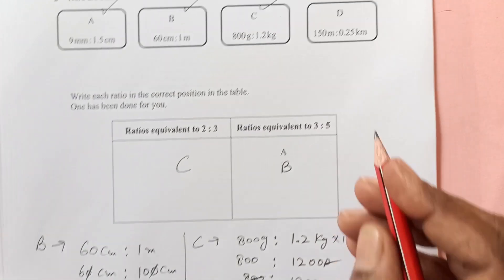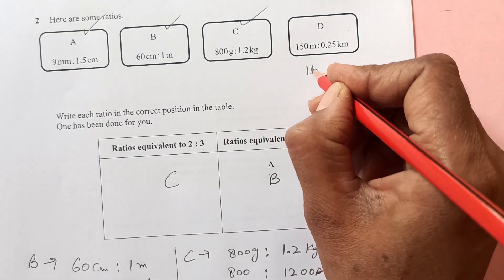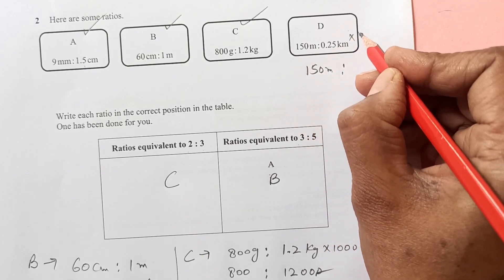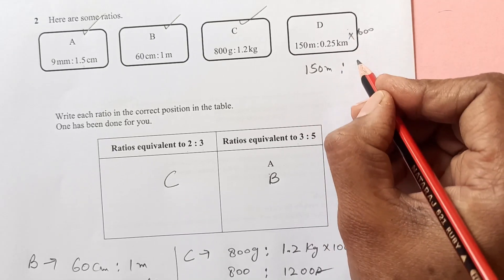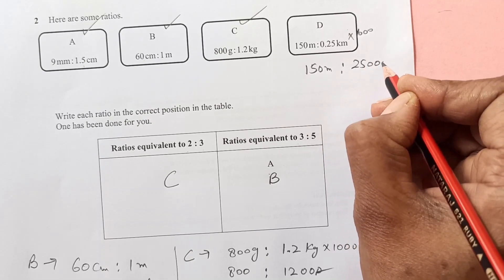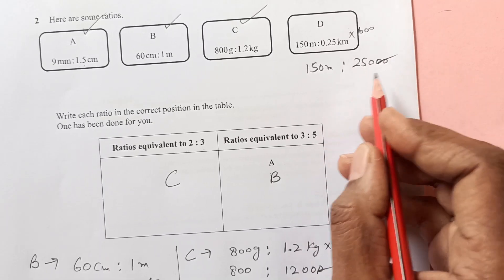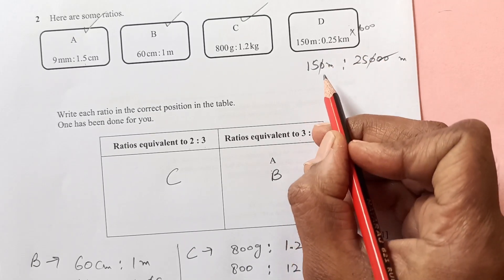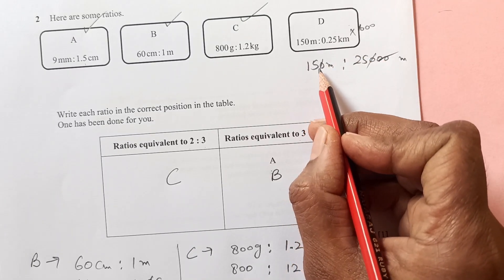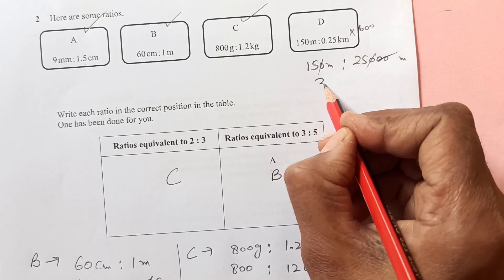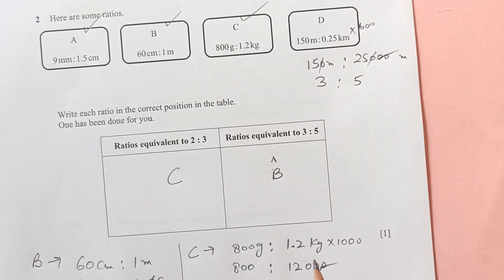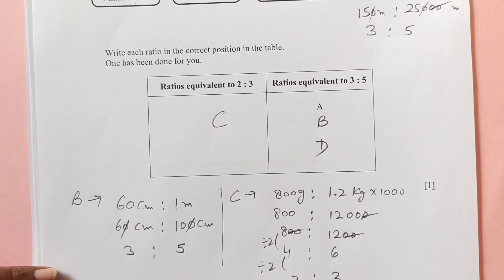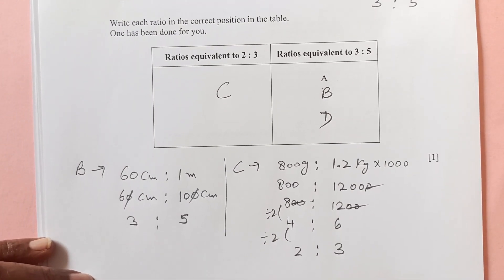Now D. For D we have 150 meters ratio 0.25 kilometers. We are going to multiply it by 1000, so that is 250. 150 and 250, this 0 will be cancelled. It is divisible by 5. 5 times 3, 5 times 5, so 3:5. D is going to come over here.